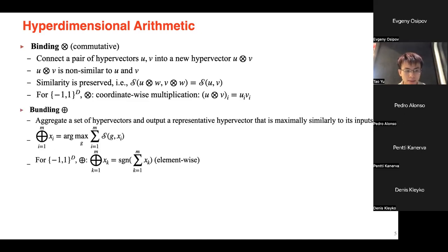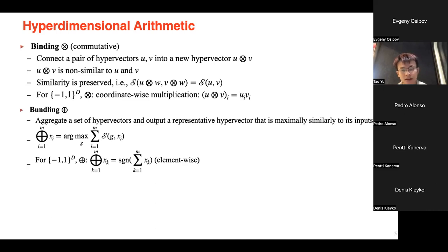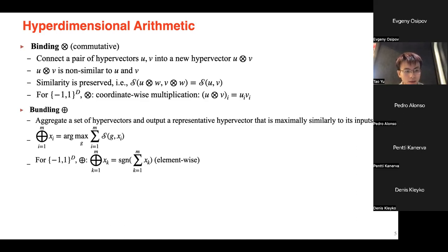The bundling operator aggregates a set of hypervectors and outputs a representative hypervector maximally similar to all inputs — it finds the hypervector in the same hyperspace most similar to all input hypervectors. In bipolar space, bundling is the element-wise sign of the sum of input hypervectors. Both operations are very simple and can be used in a highly parallel manner.